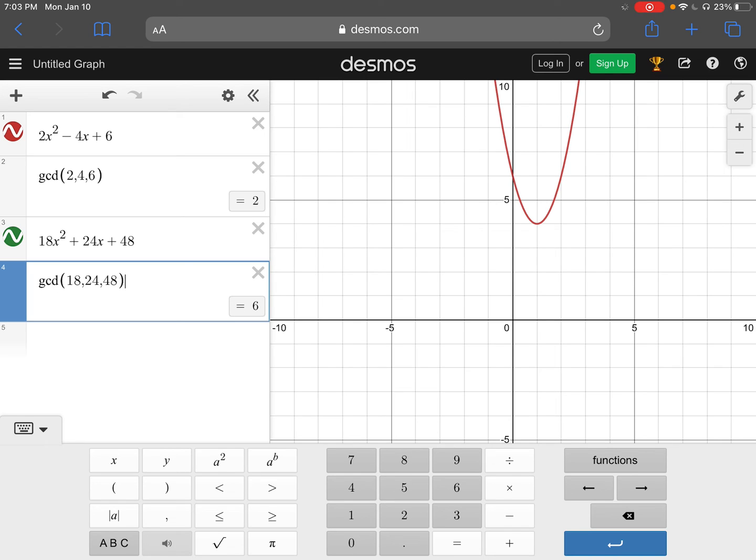So then we can see down here in the bottom right hand corner that our greatest common factor of 18, 24, and 48 is 6.